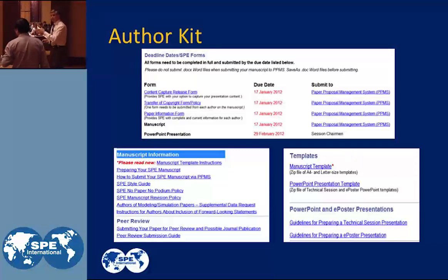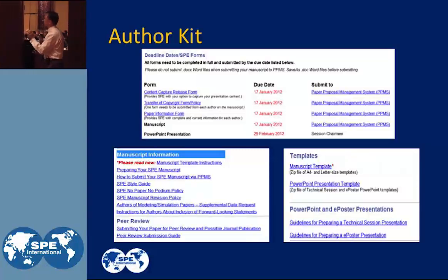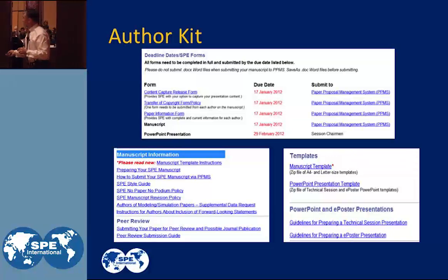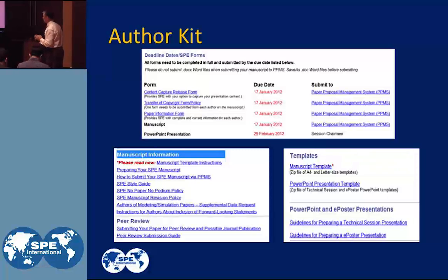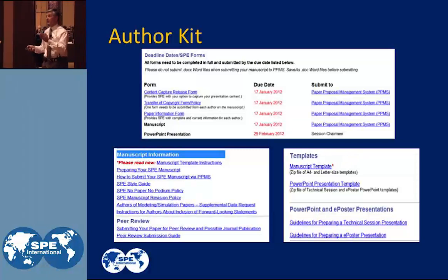The author kit — this is what it looks like from the screen. This is the template. It gives you the deadline dates, the SP forms. All your abstract goes into a paper proposal management system. It also tells you the due dates. Pay specific attention to those due dates. There's the manuscript information, it tells you about the template and the instructions. It tells you about preparing the SP manuscript. The style guide is a reference. If you don't put a paper together in the time stated in the author kit, you don't present.